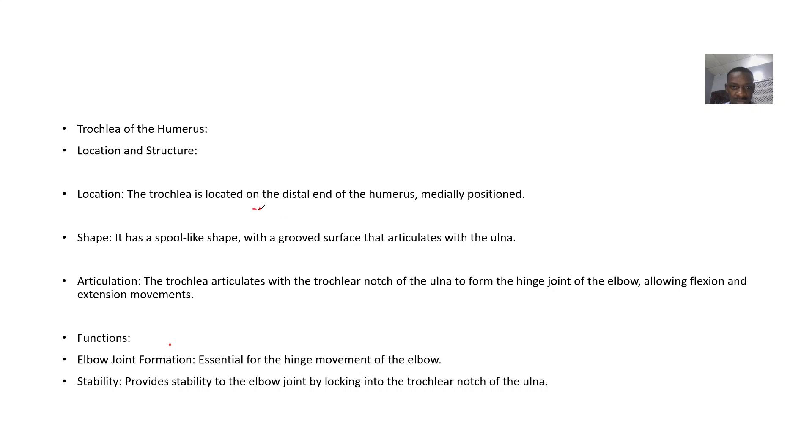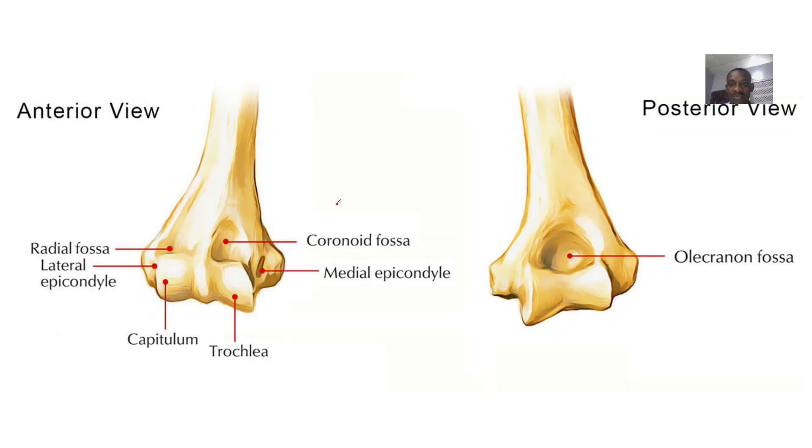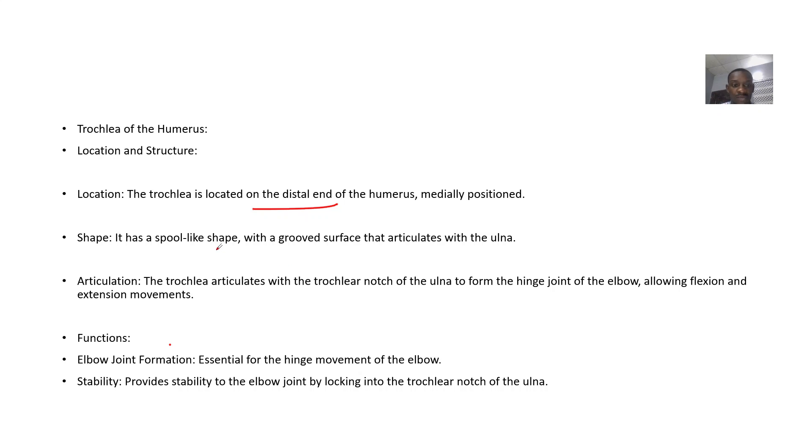the trochlear is located on the distal end of the humerus, medially positioned. For shape, it has a spool-like shape